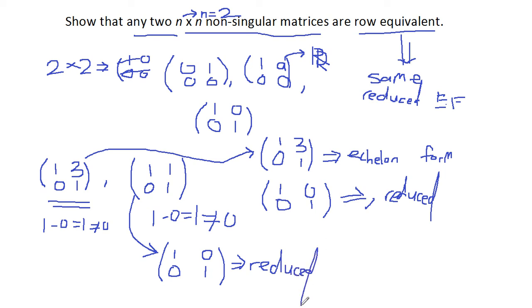Therefore, if you notice, this matrix and this matrix, the reduced matrices are the same, which means they have the same reduced form and therefore they are said to be row equivalent.